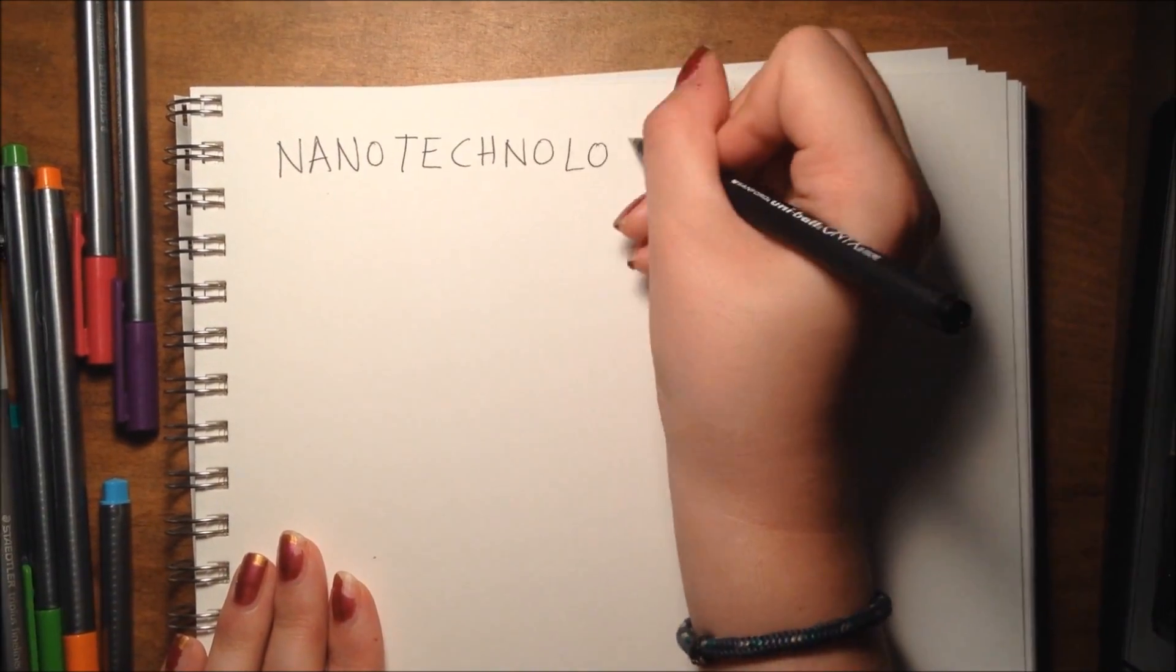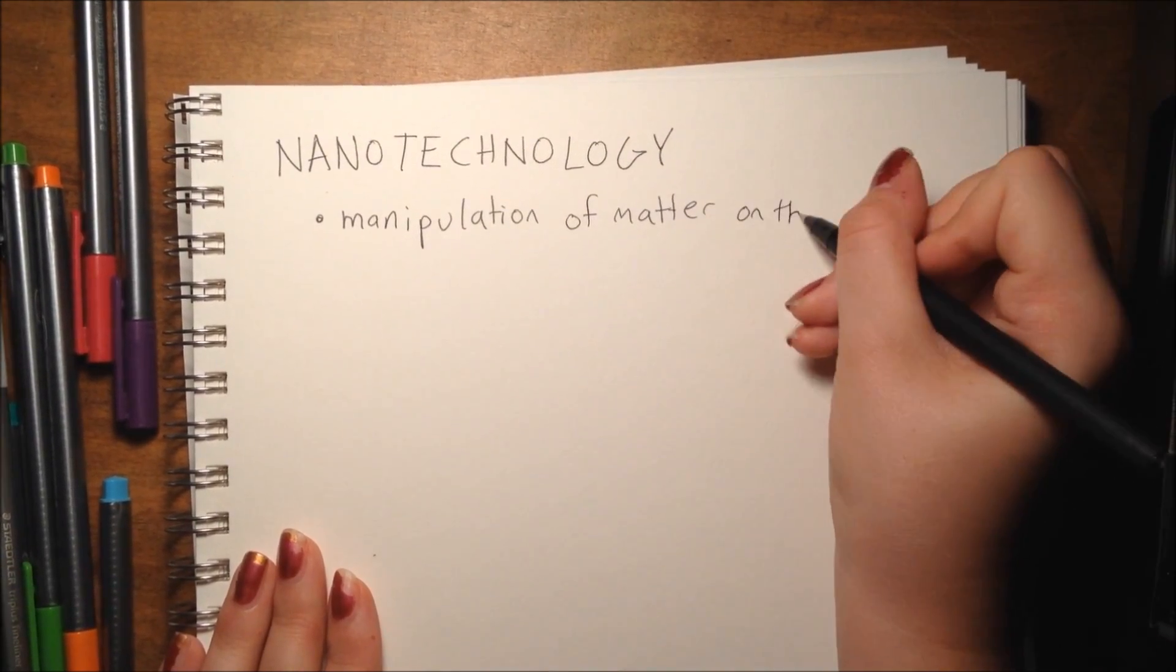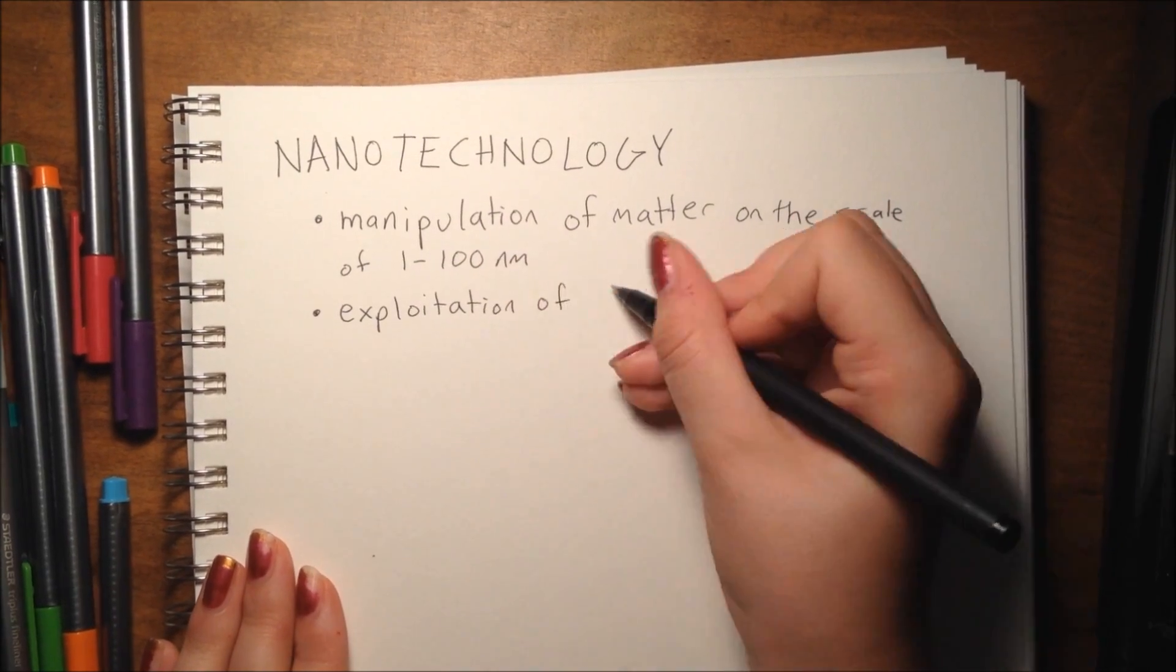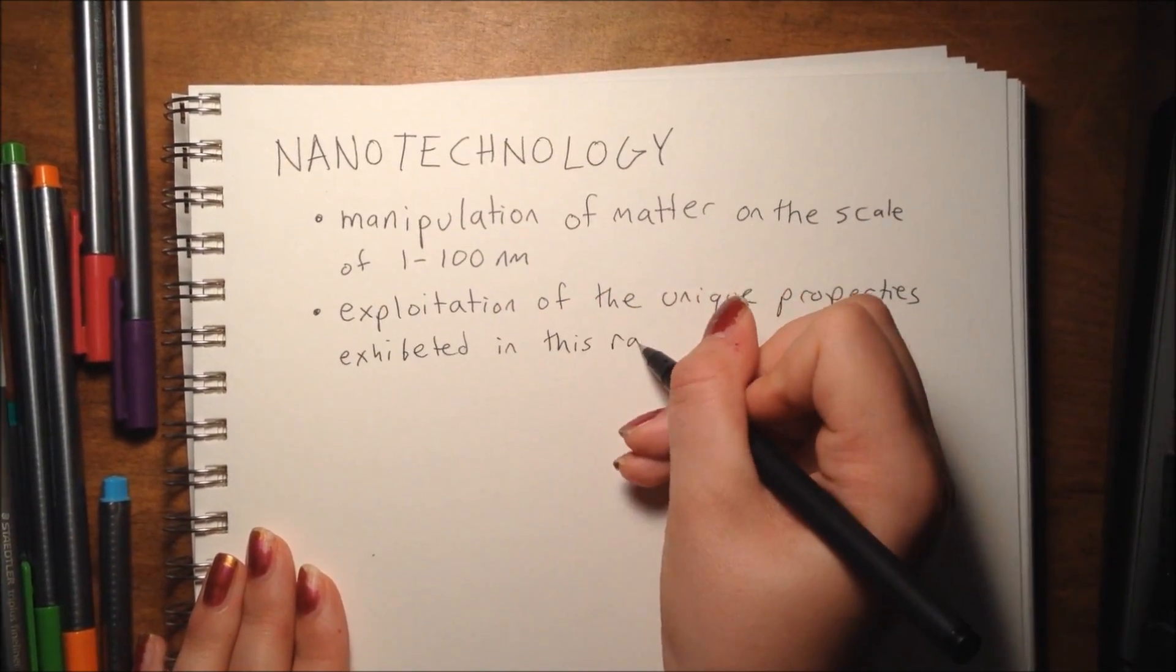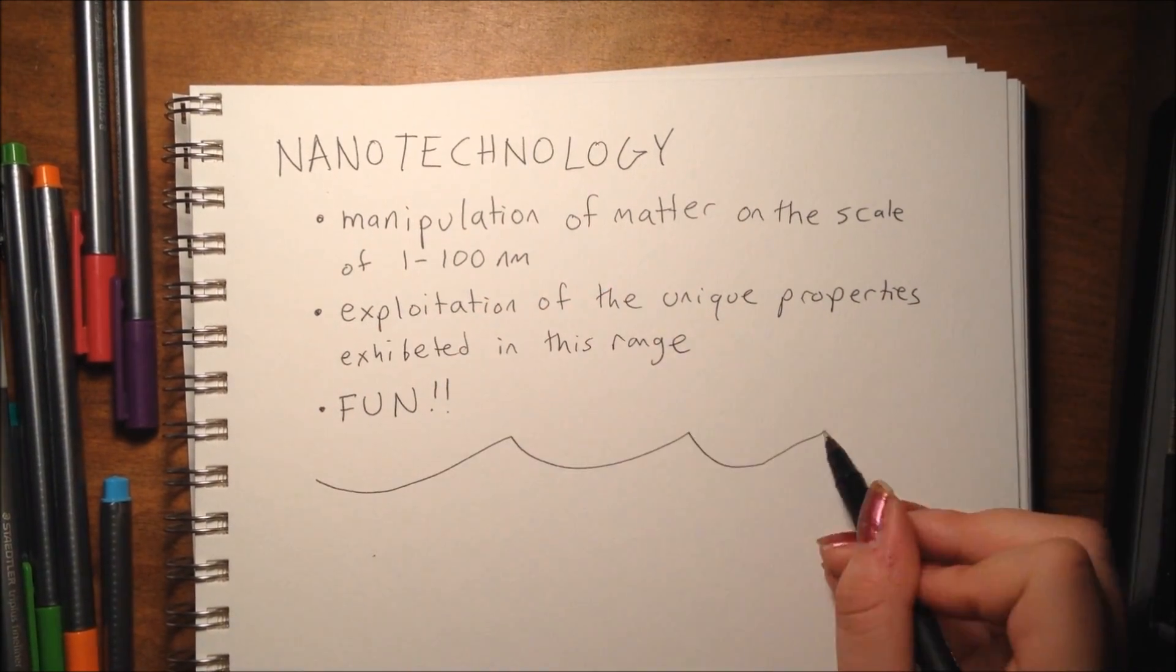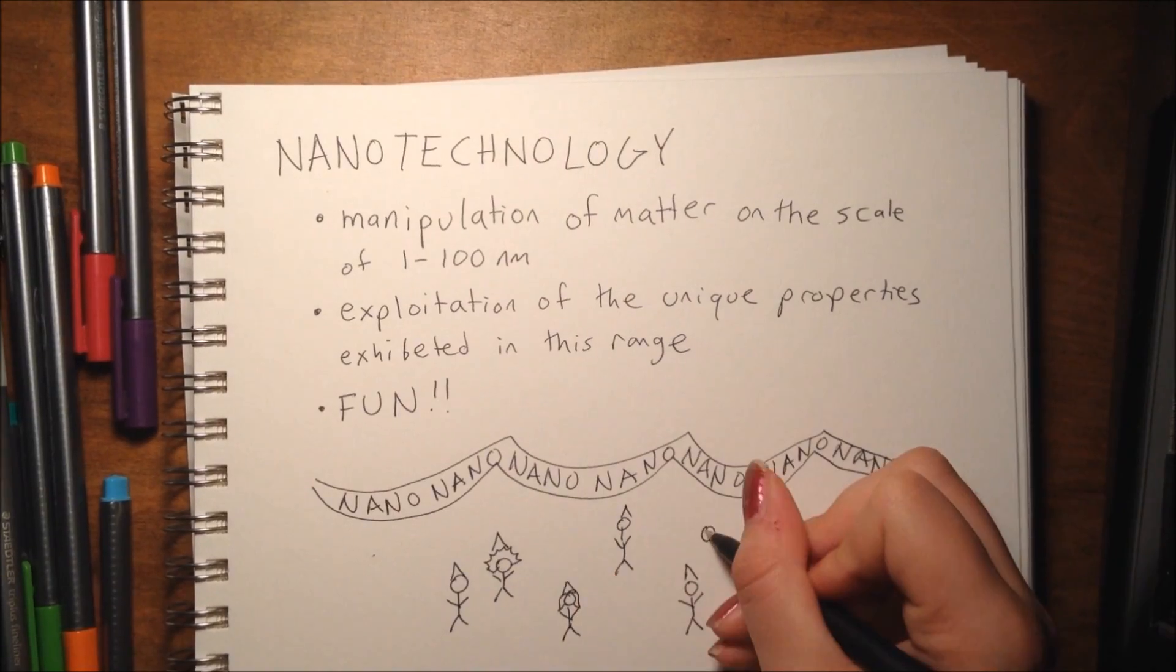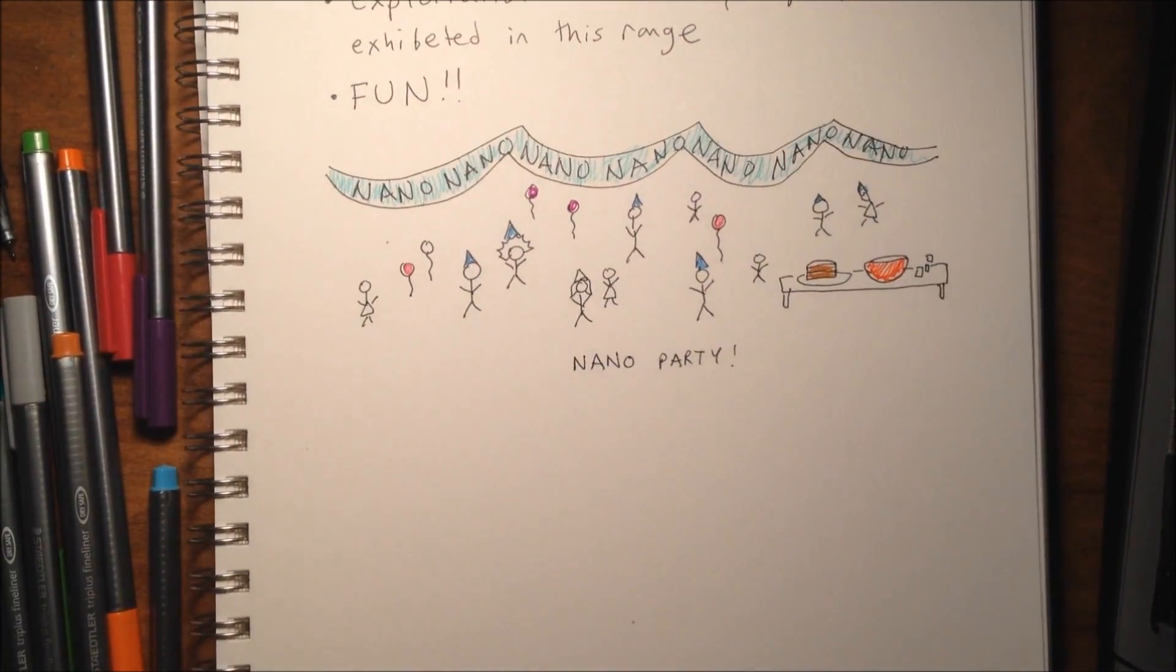In summary, nanotechnology is really the manipulation of matter on the scale of 1 to 100 nanometers, or in an atomic range, and the exploitation of the unique properties exhibited in this range. Nano is also pretty fun, so check back to find out more about how nano is used in different products and to have nano misconceptions busted.